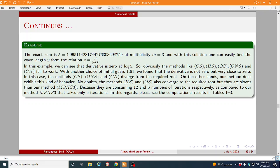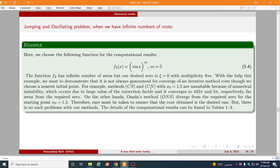So whenever we choose initial guess log 5 obviously the method CS, HS, OS, NS fails to work. With another choice 1.61 it is quite close to this and we found that derivative is not zero but very close to zero and again in that case the method CS, ONS and CN will diverge from the root. No doubt CH and OS converge but in that case they are taking more number of iteration as comparative to ours. The details are given in the upcoming slides.